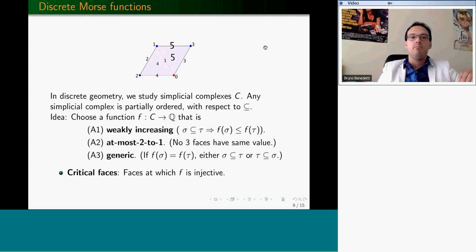The final axiom is a genericity condition. Whenever two faces have the same number, they have to be one containing the other. We call a face critical if at this face the function is injective—if it gets an exclusive value. How many critical faces do you see in the picture? There is only one, which is actually supposed to be red. Only one vertex is assigned the value zero.